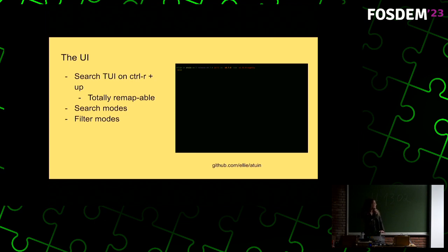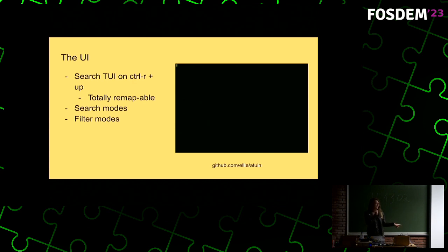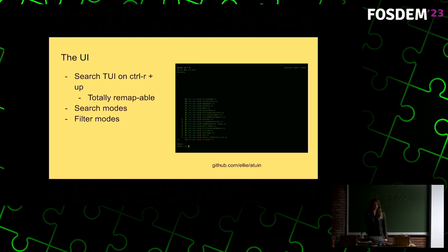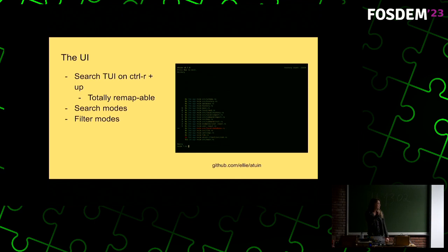Hopefully you can see the GIF on the right. On top of this database, we also built a search TUI. This is bound by default to Ctrl+R and the up arrow, which is a little bit contentious for some people, so you can remap that too. The search UI has three different search modes by default: a fuzzy search inspired by FZF, a prefix search, and a substring search.